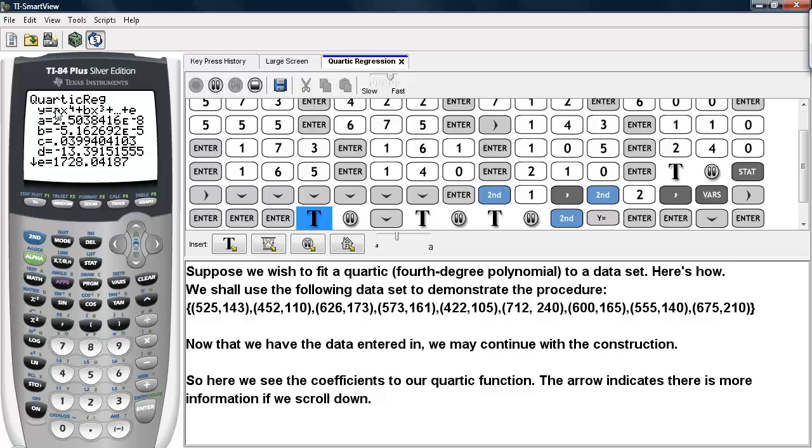Now here, we see that we have the information. We have Y equal AX to the fourth plus BX cubed plus CX squared plus DX plus E. The coefficient of X to the fourth is A. This is about 2.5 times 10 to the negative 8. So watch out for the scientific notation here. The calculator will attempt to display as much of the information as it can and keep all of the digits to their highest accuracy as the memory will allow. So watch out for the scientific notation. It may appear in some of your calculations.